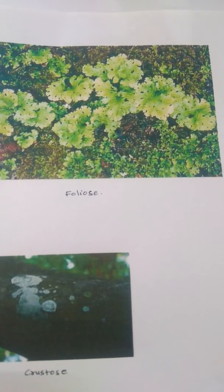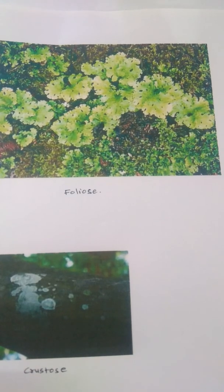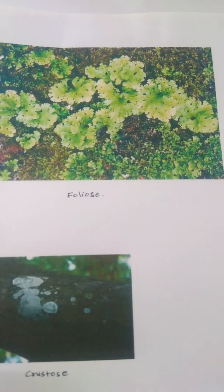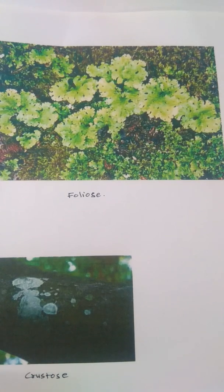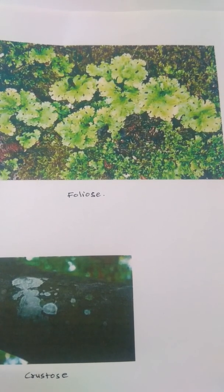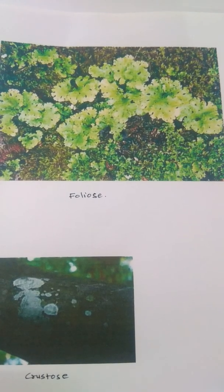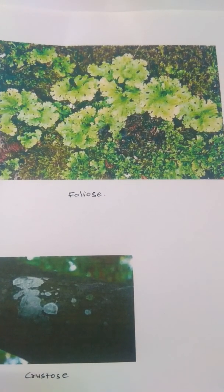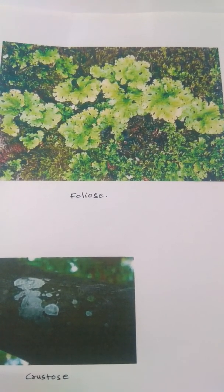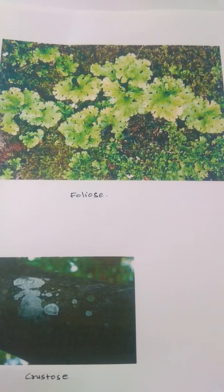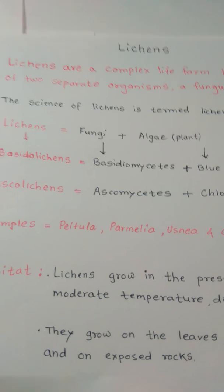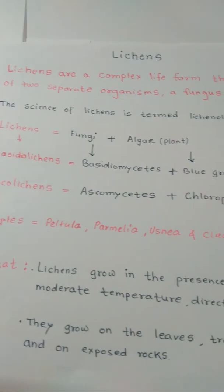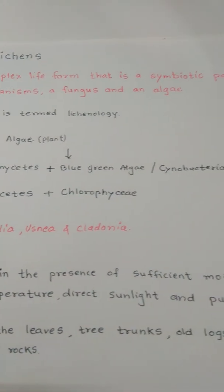Lichens are a plant-like structure but they are not a plant. Lichens are made from two different groups: Fungus and Algae. Fungus partners and algal partners come together and create Lichens. So it is not Fungus alone and Algae alone. We can define Lichens as: Lichens are a complex life form that is a symbiotic partnership of two separate organisms — Fungus and Algae.